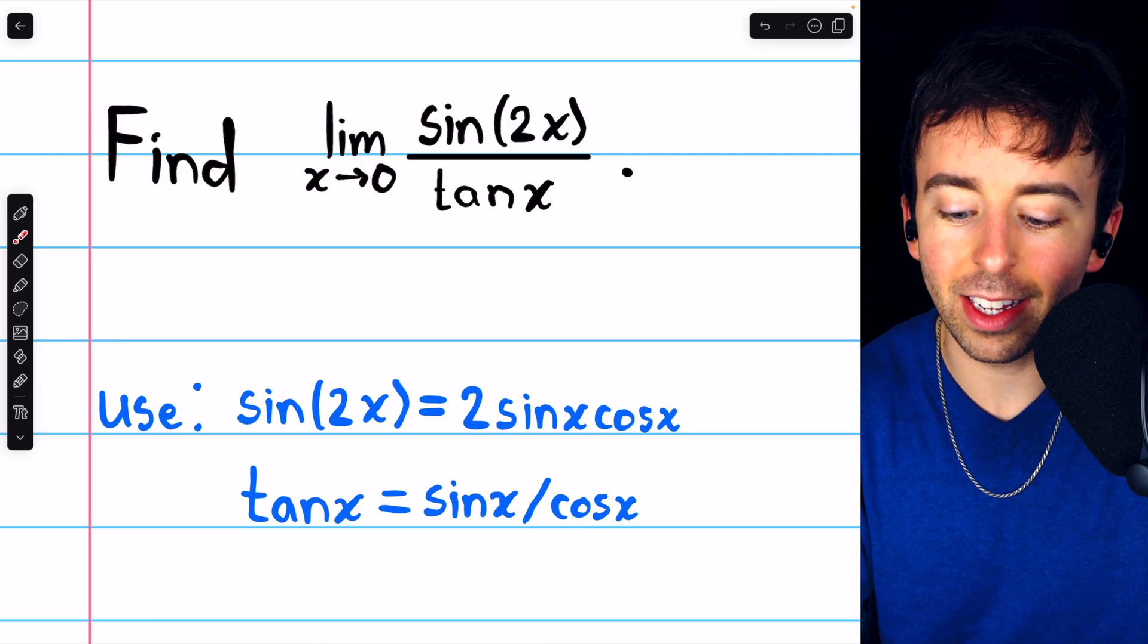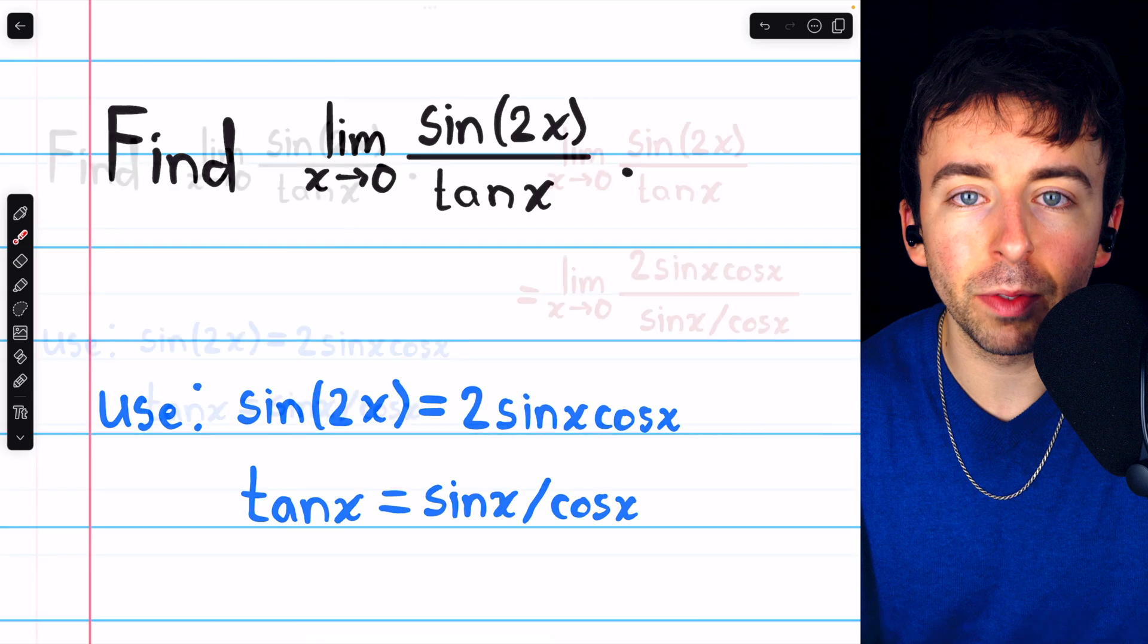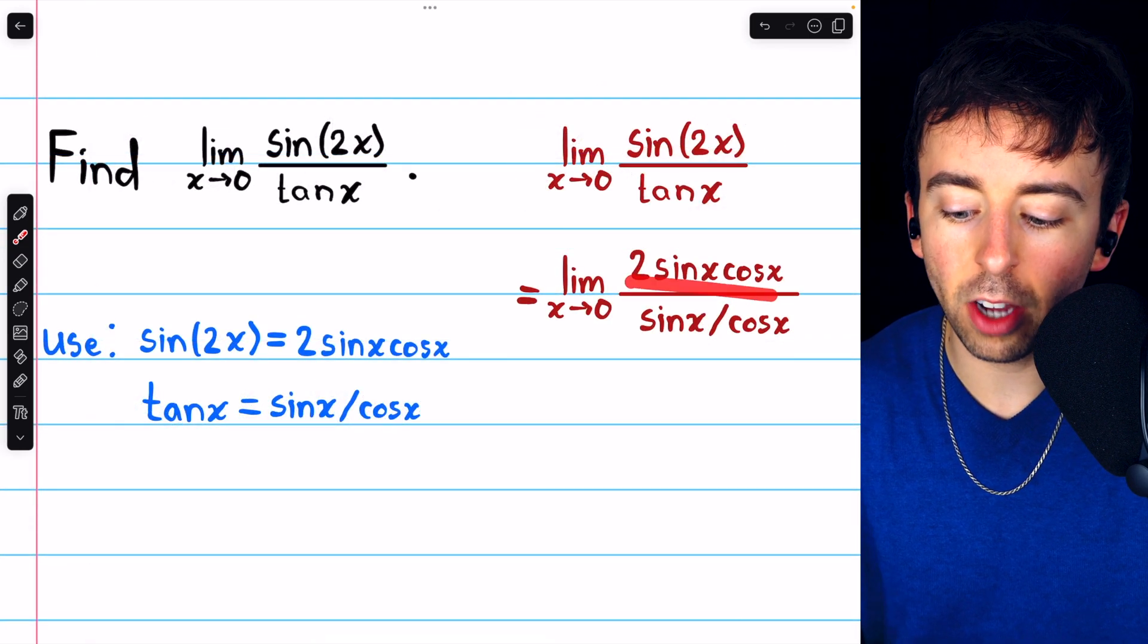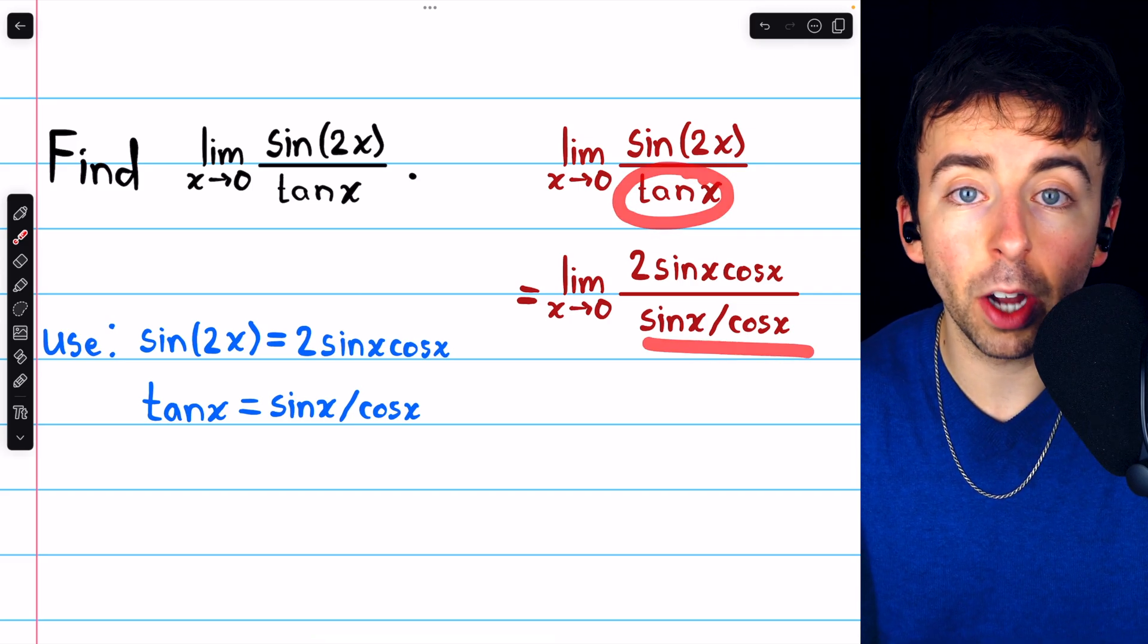Let's apply these identities to rewrite the expression in the limit and then simplify. So in our limit, we replace sine of 2x with 2 sine x cosine x and we replace tangent x with sine x over cosine x.